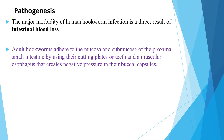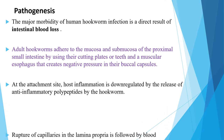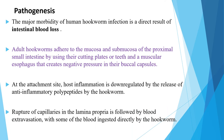Hookworms use their cutting plates or teeth and a muscular esophagus that creates negative pressure in their buccal capsules. At the attachment site, host inflammation is downregulated by the release of anti-inflammatory polypeptides by the hookworm, and rupture of capillaries in the lamina propria is followed by blood extravasation, with some of the blood ingested directly by the hookworm.